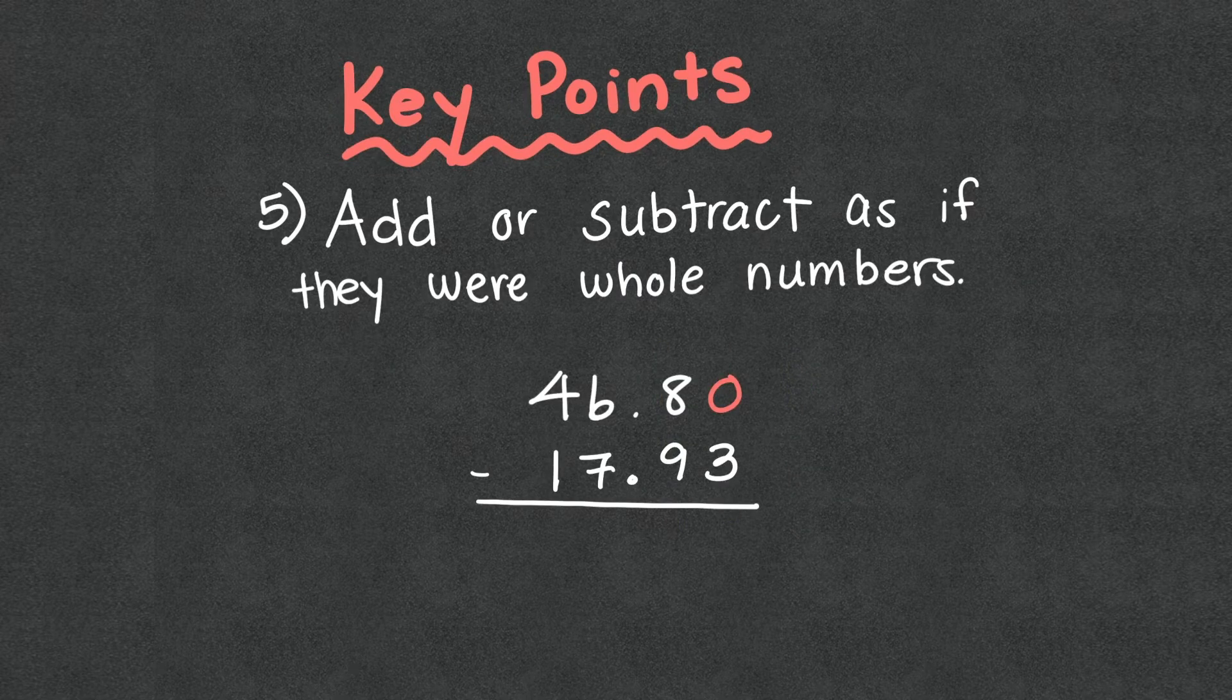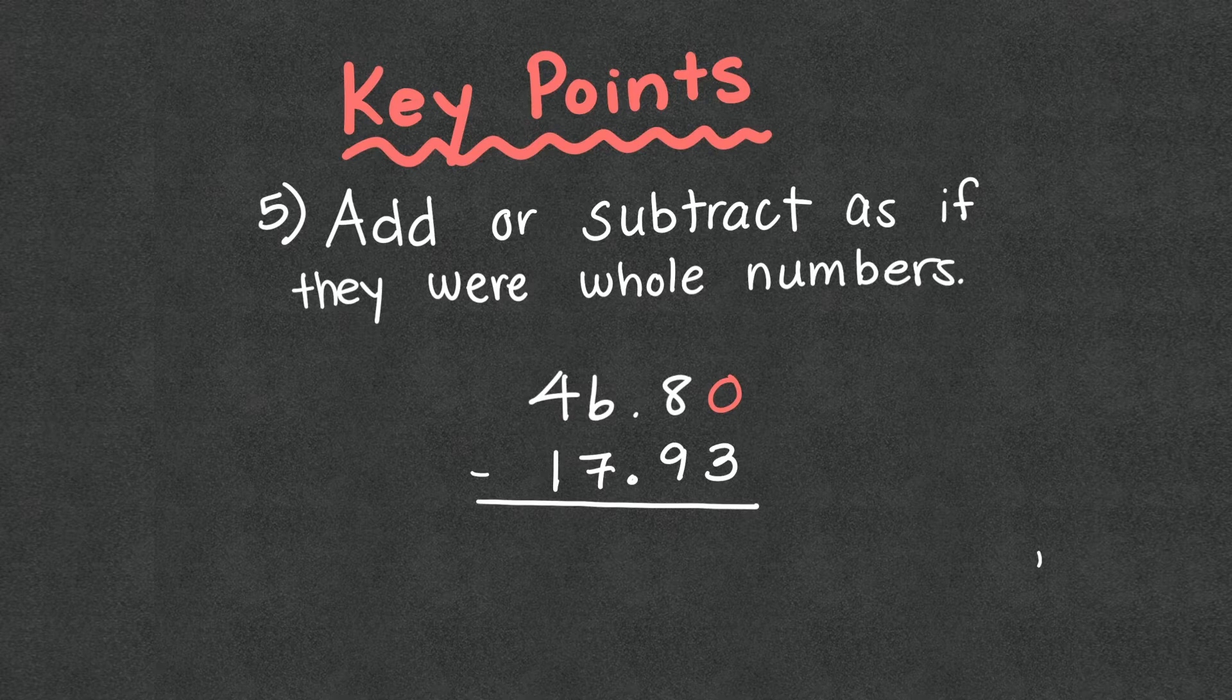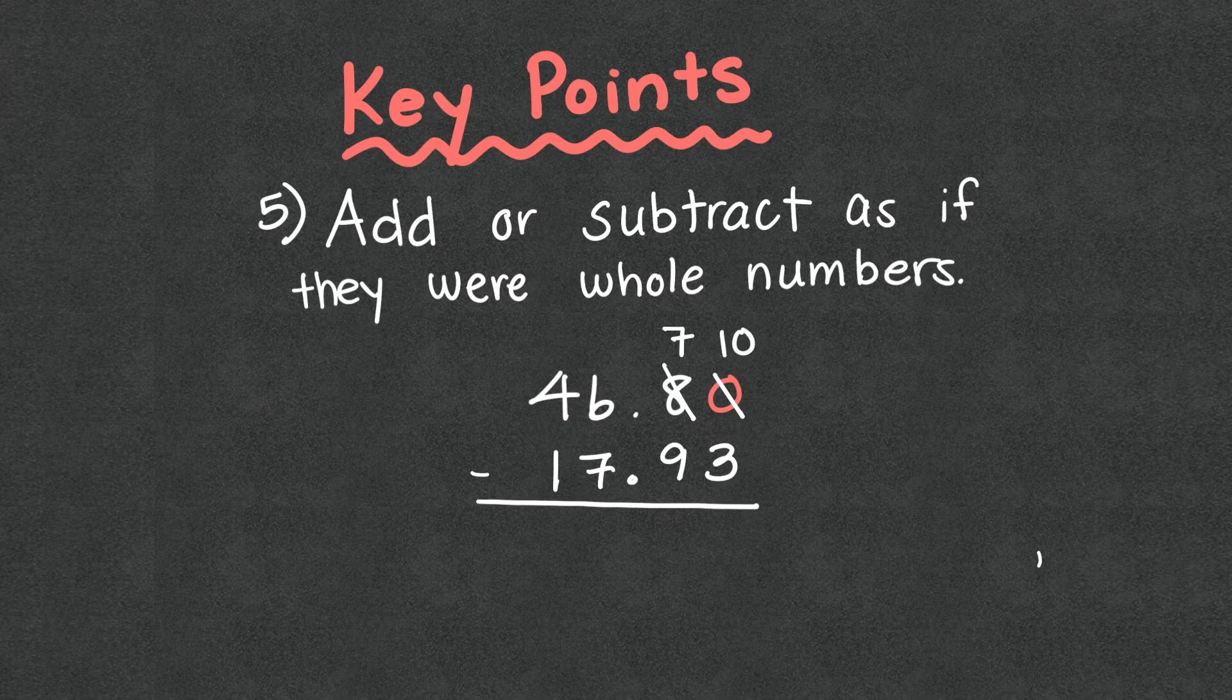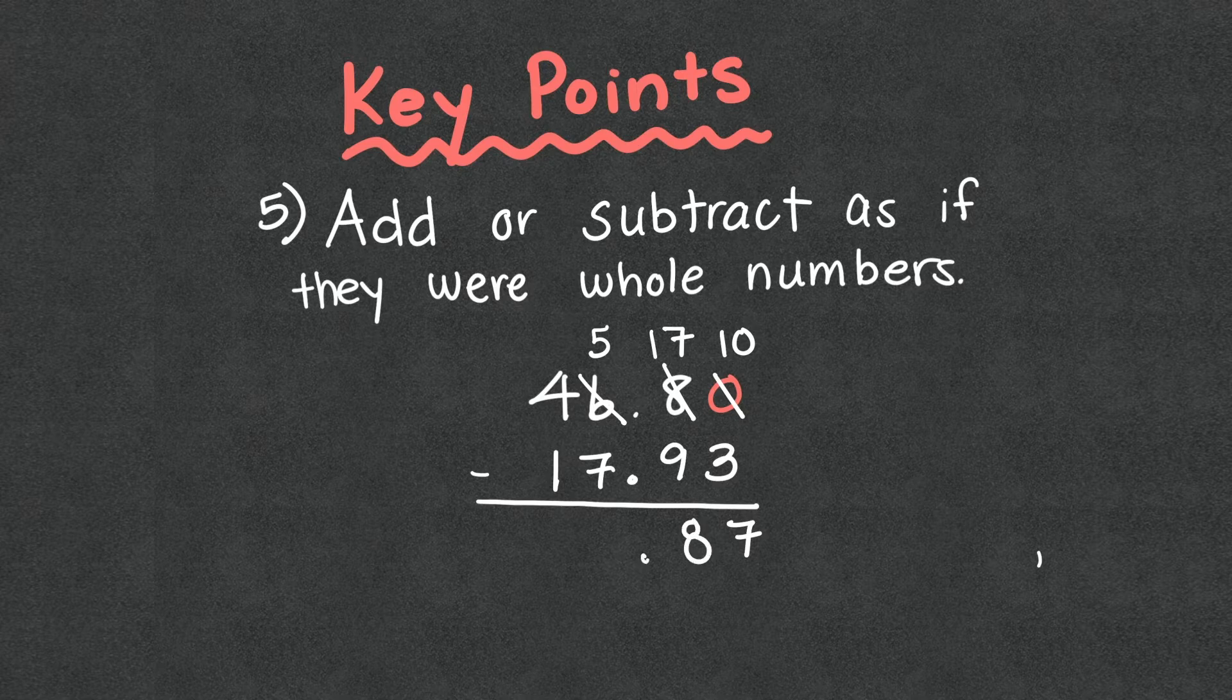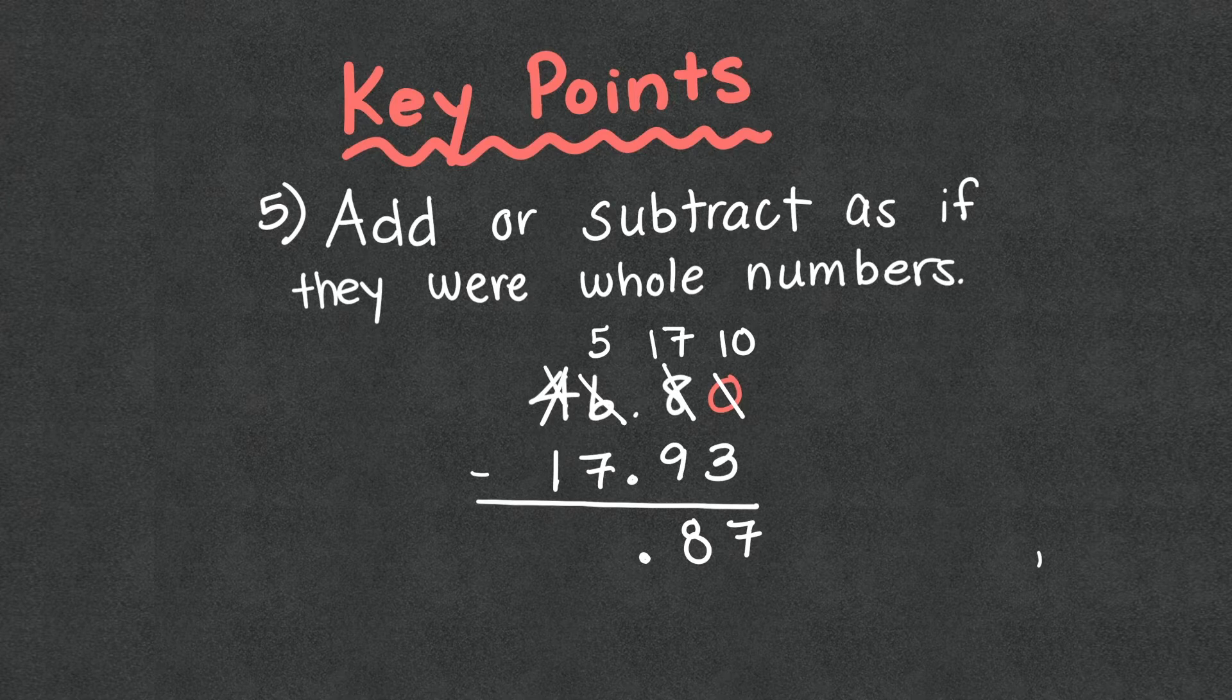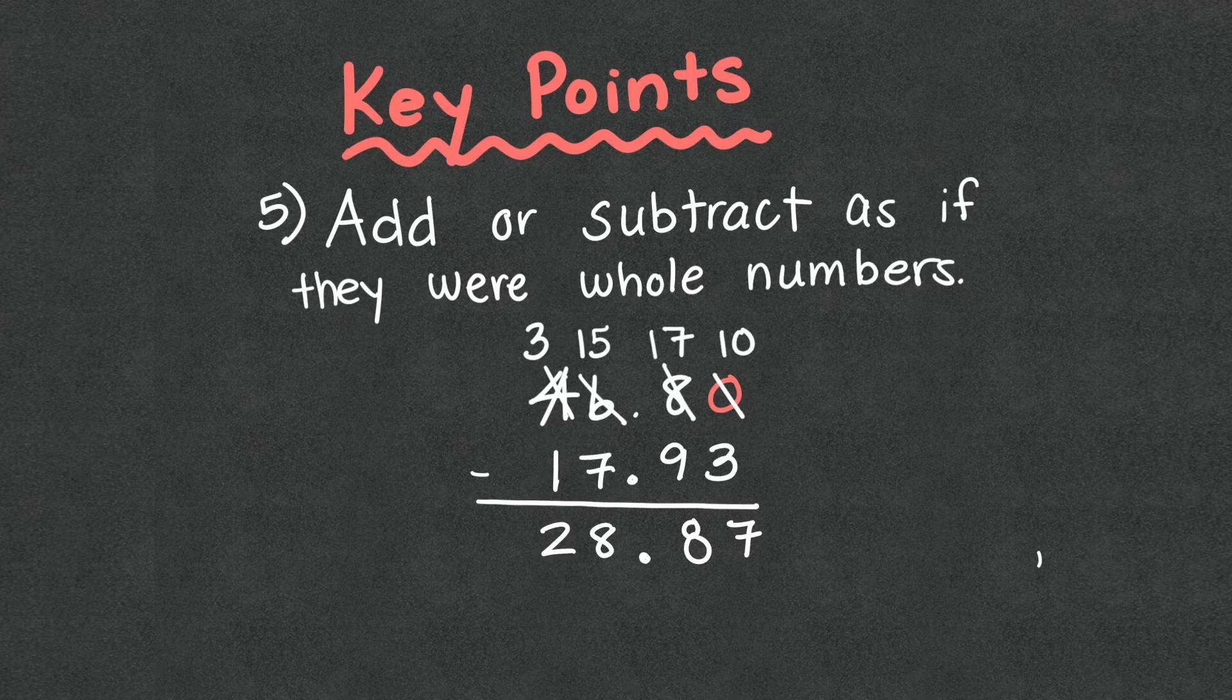When you add or subtract, you're just going to do it as if they were a whole number. So if we took the problem from before, zero minus 3, we can't do it. So we borrow from the 8, make it a 7. This zero becomes a 10. 10 minus 3 is 7. 7 minus 9, I can't do it. Borrow from the 6, make that a 5. The 7 turns to a 17. 17 minus 9 is 8. I'm going to bring down my decimal point straight down. 5 minus 7, I can't do it. Borrow from the 4, make it a 3. Add 10, make it 15. 15 minus 7 is 8. 3 minus 1 is 2. So our final answer would be 28 and 87 hundredths.